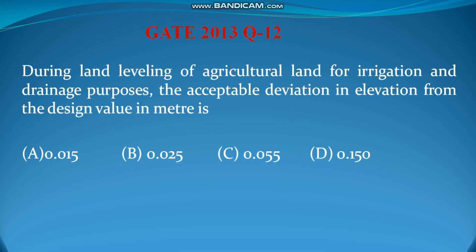During land leveling of agricultural land for irrigation and drainage purposes, the acceptable deviation of elevation from the design value in meters is: 0.015, 0.025, 0.055, or 0.15 meter.